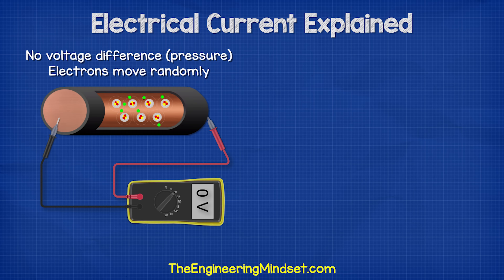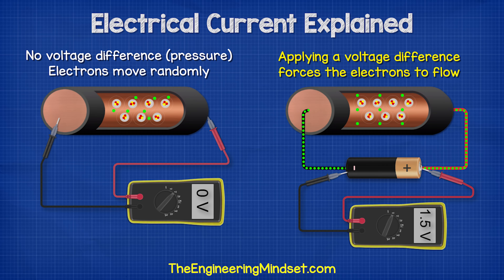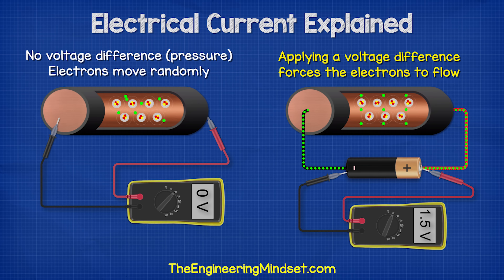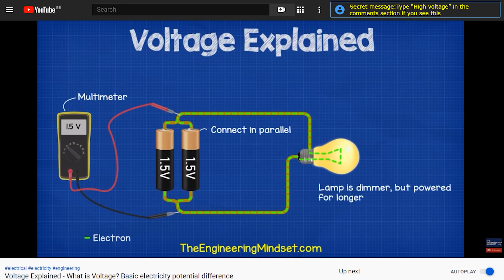If we take a copper wire, there is no voltage difference between the two ends, so the free electrons move around randomly. This random movement is not considered a current. But if we take a battery of say 1.5 volts and connect the wire across the two terminals, then there is now a difference of 1.5 volts across the wire, and this difference is going to force electrons to flow in the same direction. We've covered the basics of voltage in detail in our previous video — do check that out, links can be found in the video description down below.